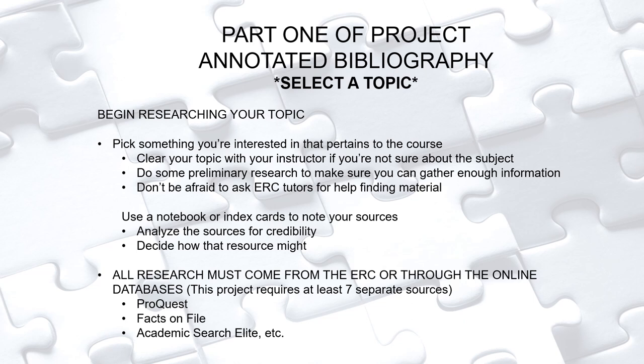All research must come from the ERC or the online databases. You're going to need at least seven different sources. That means you might use one article from ProQuest, another from Facts on File, another from Academic Search Elite, and so on. You may also decide to use a print book as a source. There are over 200 different databases, so you'll have no problem finding seven sources.